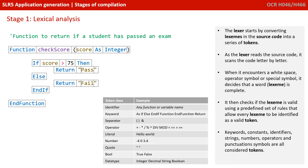Keywords, constants, identifiers, strings, numbers, operators and punctuation symbols are all considered valid tokens in programming languages.